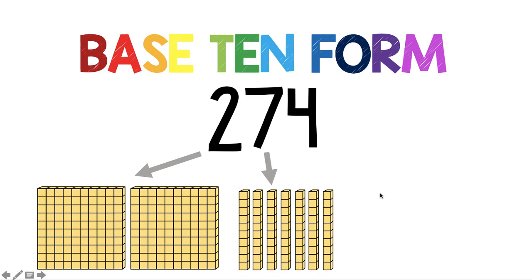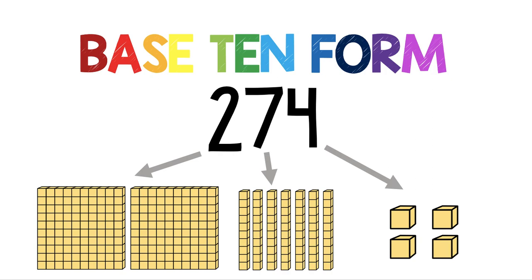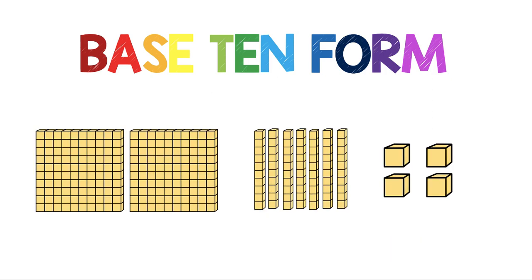For 4, we're going to use ones blocks since it's in the ones place — 4 ones blocks. So base 10 form is going to show us 2 hundreds blocks, 7 tens blocks, and 4 ones blocks to make 274.